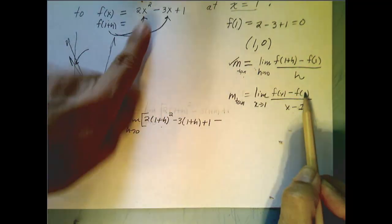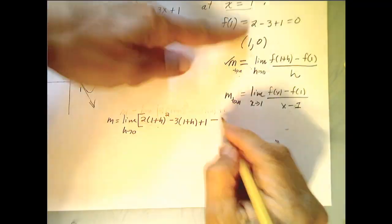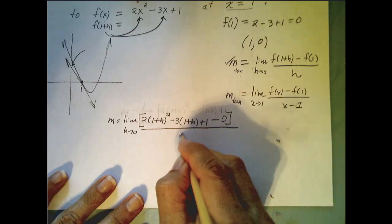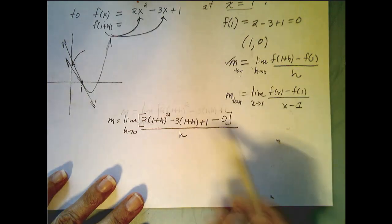Minus f of 1. And I already know what f of 1 is - it's 0. So that's easy. All divided by h. Now we need to clean this up and simplify.